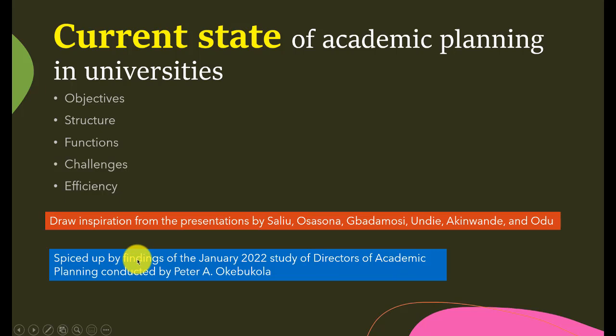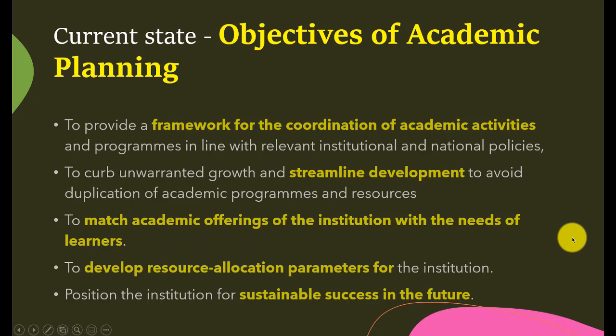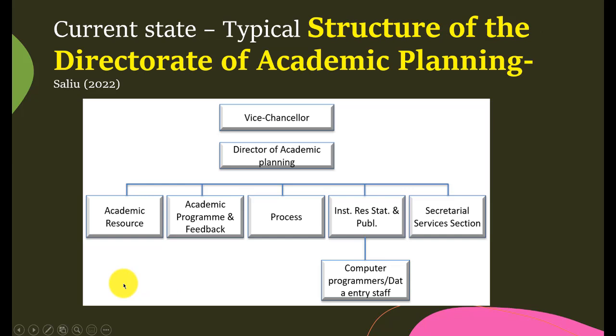What are the objectives of academic planning as of today? The objectives include: to provide the framework for the coordination of academic activities, to ensure streamlined development and avoid duplication of academic programs and resources, to match academic offerings of the institution with the needs of learners, and to develop resource allocation parameters and position the institution for sustainable success in the future.